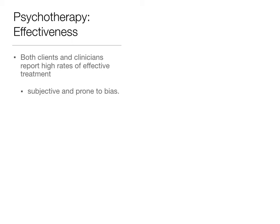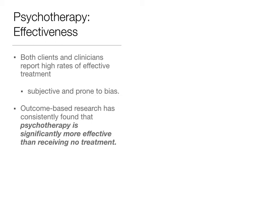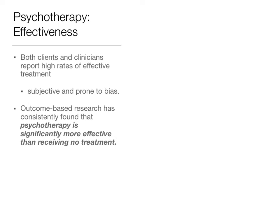In terms of effectiveness, all therapies are winners. Both clients and clinicians report high rates of effective treatment, and evidence-based research has consistently found psychotherapy is more effective than no treatment at all. Therapy is most effective when the problem is clear-cut and specific. This graph shows that participants who received psychotherapy had about a 30% improvement rating after two weeks, rising to 80% by one year and 90% by two years, compared to those who received no therapy.